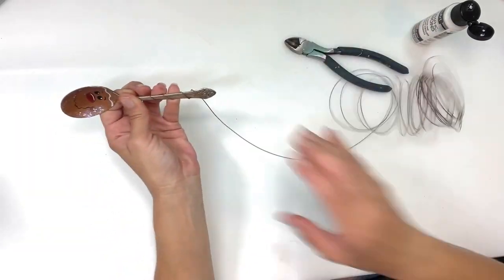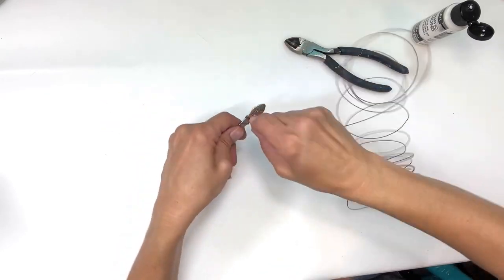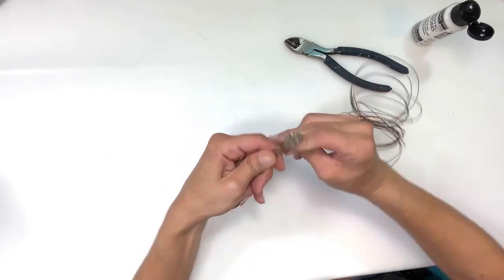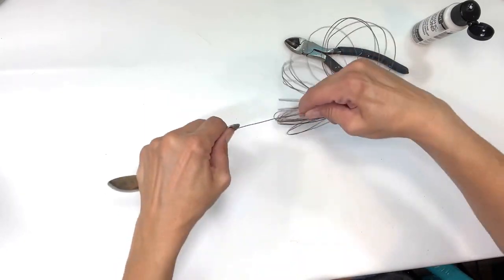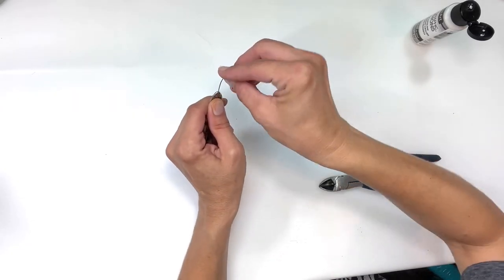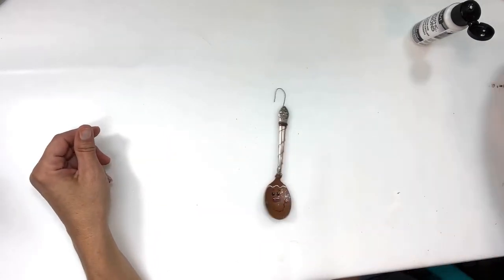Then stop right before the end of the handle and start wrapping again on top of each other. Just keep going till I have it how I want it, and then I'm going to leave a little bit at the end around the back and fold it over for a little hook for it to hang. And how cute is he so far?